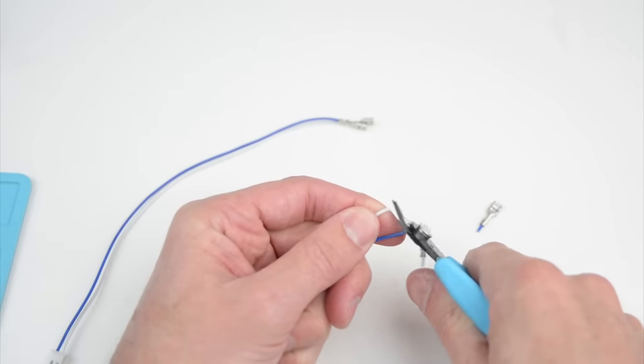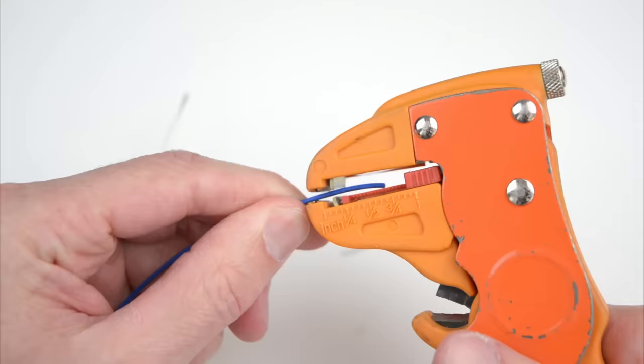To begin the wiring, take two sets of wires, cut off the four metal terminals, and strip the ends of the wires.